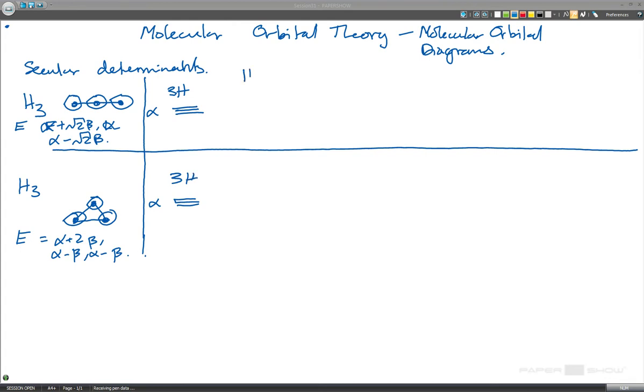So, if we draw a little molecular orbital diagram here, we have three hydrogen 1s orbitals for the H3, which all start at the energy alpha in both cases. And then we make the H3 molecule.